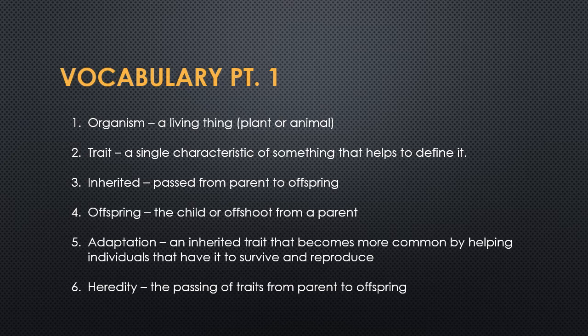Offspring is the child or offshoot from a parent — offshoot being like if we're talking about a plant or something. Adaptation is an inherited trait that becomes more common by helping individuals that have it to survive and reproduce. And heredity is the passing of traits from parent to offspring — if something's hereditary, it's passed from parent to offspring.